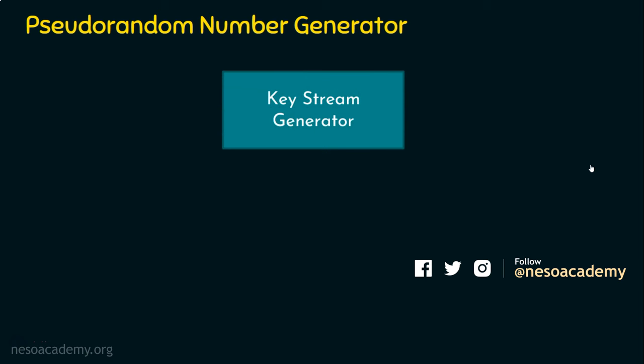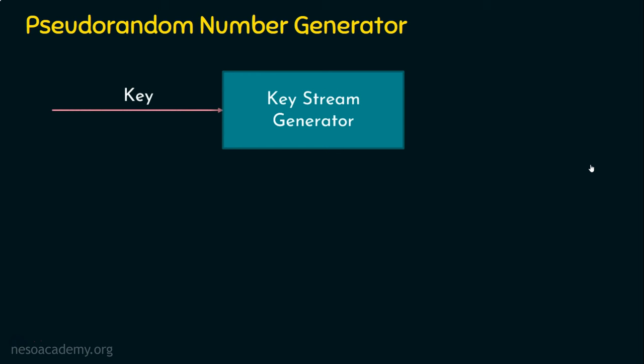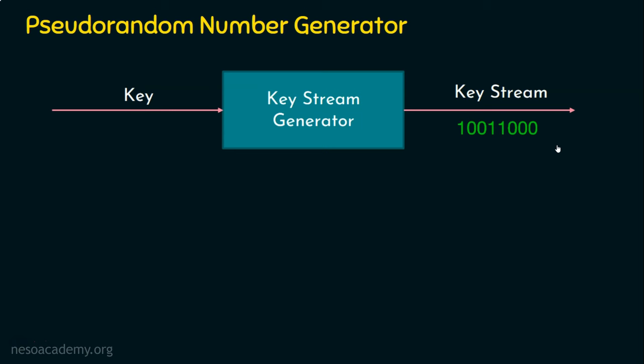Before understanding randomness, let's take a scenario. Let's say there is a keystream generator that is going to generate random numbers. The input given to this keystream generator is referred to as a seed or key. The keystream generator takes this key as input and generates a keystream — a sequence of bits, zeros and ones. The keystream generator has taken a key or seed and generated a sequence of bits expected to be random in nature.